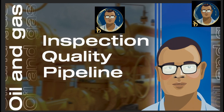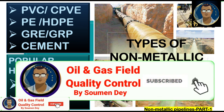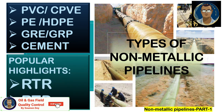Hello friends, this is Showman from Oil and Gas Field Quality Control. Today I will discuss a subject which is getting popular everywhere in the world, especially in Gulf countries. In Saudi Arabia they are even planning to replace metallic pipelines with non-metallic pipelines. There will be a couple of videos in this series, but the first one will be a brief overview. The topic is types of non-metallic pipelines. We will discuss four big categories: PVC/CPVC, HDPE, GRE or GRP, RTR and RTP, and cement pipes.